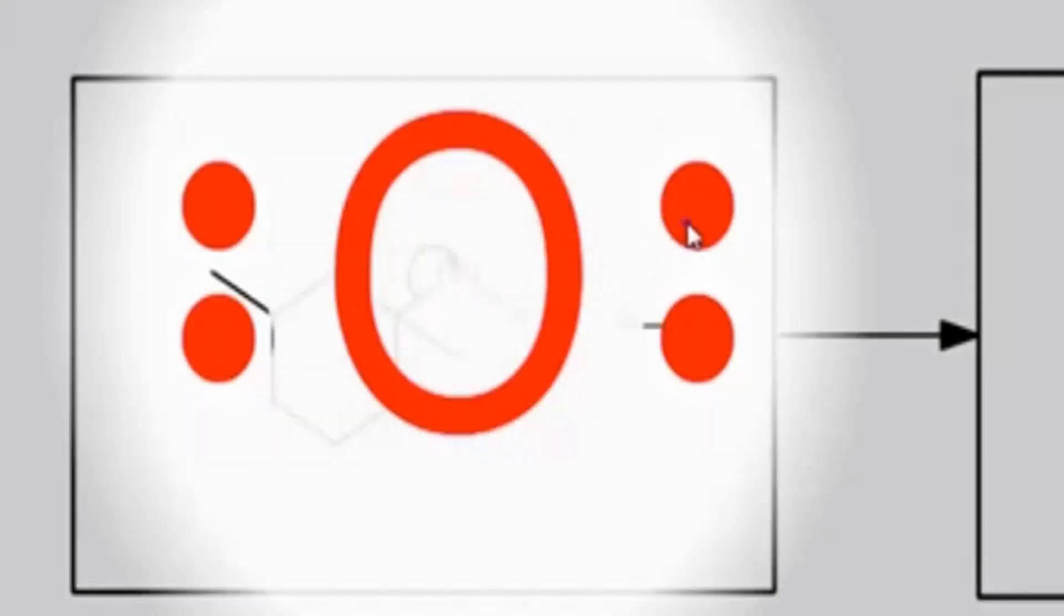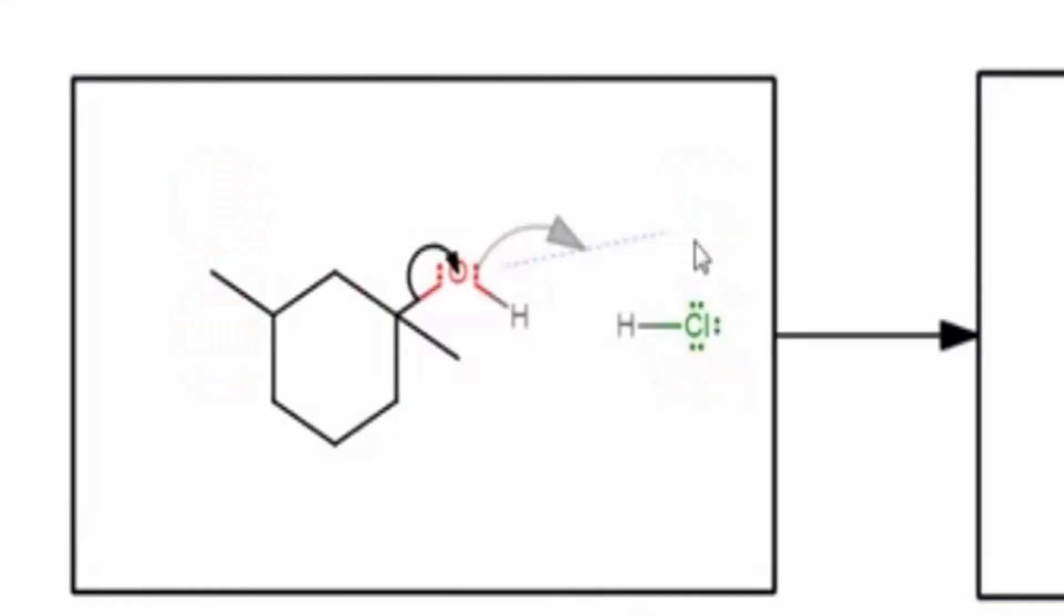Click the atom to start electron flow at the oxygen. To ensure flow starts on the electrons, the atom expands to allow an electron pair to be selected. Click a lone pair of electrons and hold down the mouse button until the atom forming a new bond with oxygen is highlighted in green. Release the mouse.